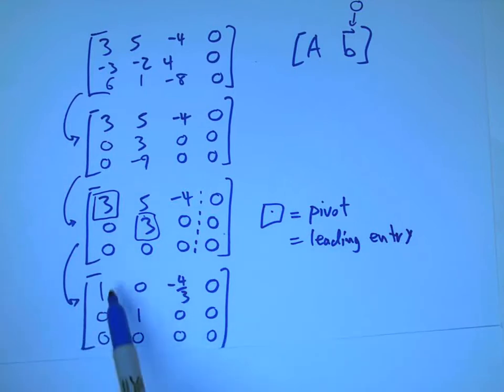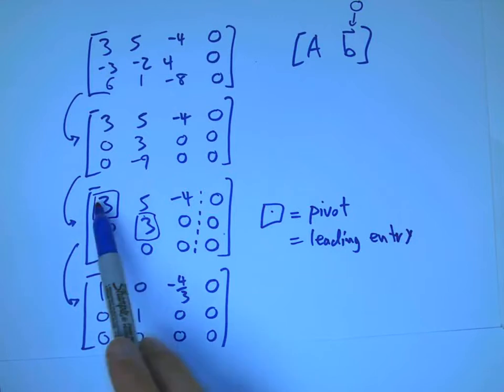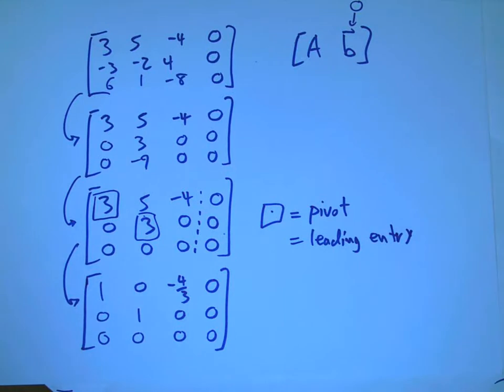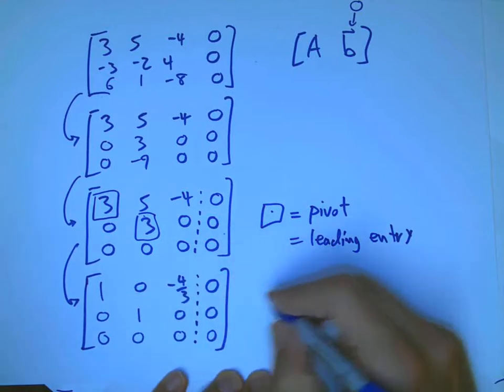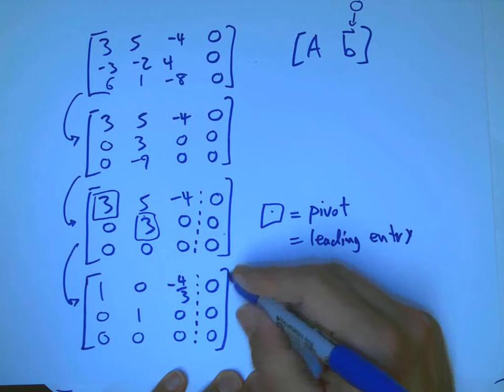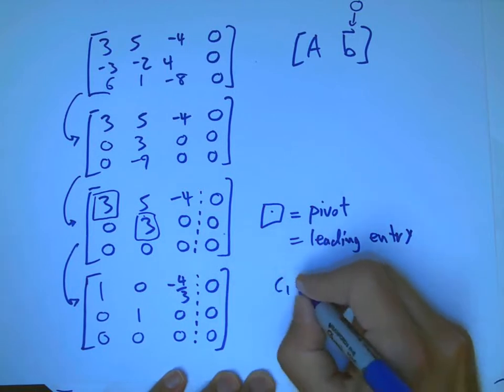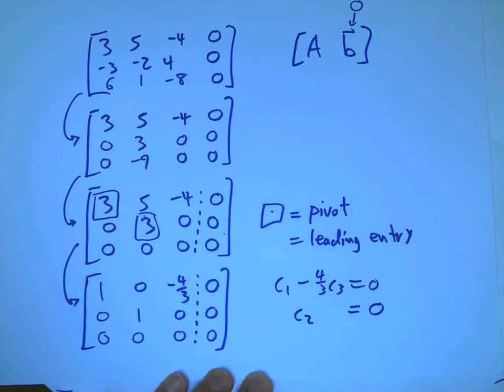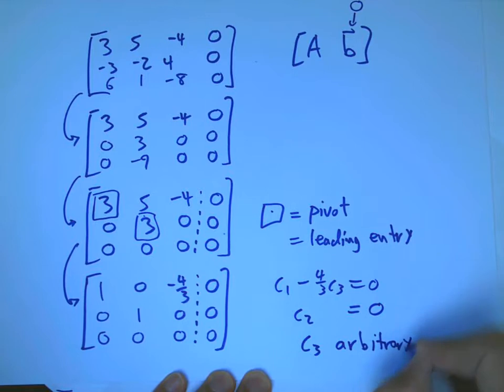Now, we can actually go all the way to the reduced row echelon form by dividing by threes and killing this one extra entry up here. And what I was pointing out in the lecture was how nice that is. I mean, it's just nice in all possible ways. It answers all possible questions if you just know which questions to ask about this matrix, and in particular about these three vectors. Because what this says is, if we write this equation back out in terms of the variables C1, C2, and C3, it says C1 minus 4 thirds C3 equals zero. And it says C2 actually equals zero. And C3 is arbitrary.